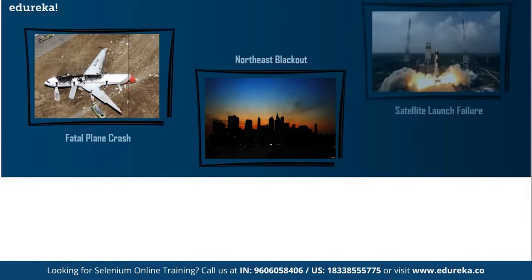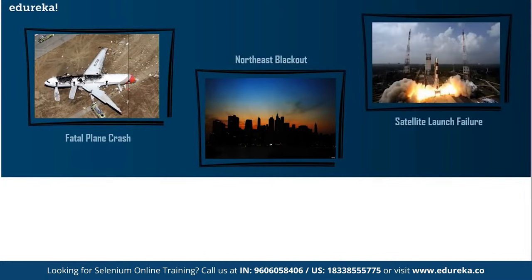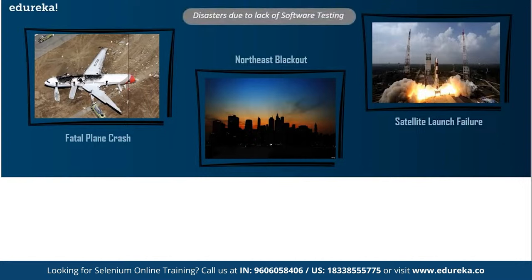On April of 1999, there was a failure of a $12 billion military satellite launch due to some sort of glitch in the satellite's guidance system. What do these three events have in common besides being very public examples of technology failures? They are examples of situations that might have been avoided if proper testing had been done on the relevant systems.